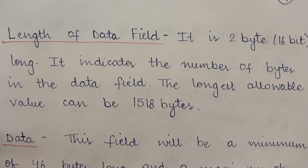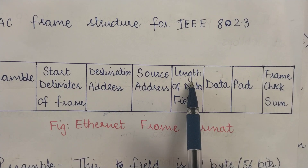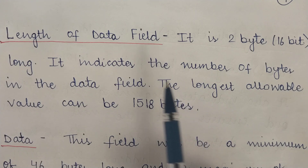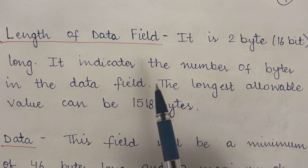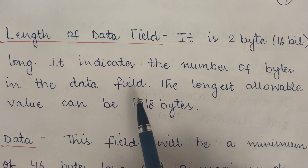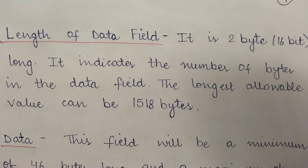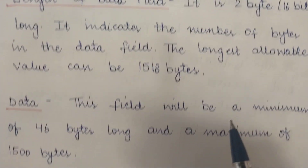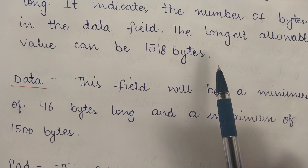The fifth field is the length of data field, which is 2 bytes (16 bits) long. It indicates the number of bytes present in the actual data field. The longest allowable value is 1,518 bytes, and this field tells the receiver how many bytes the actual data will contain.